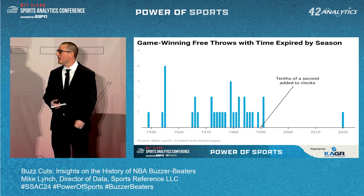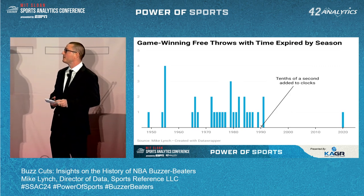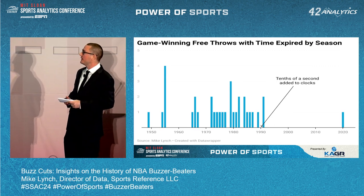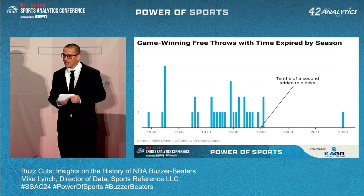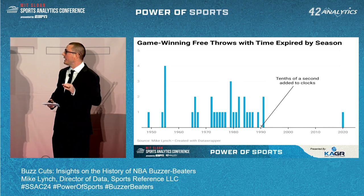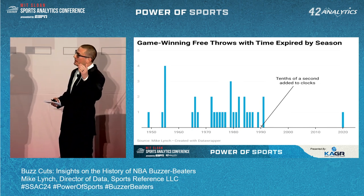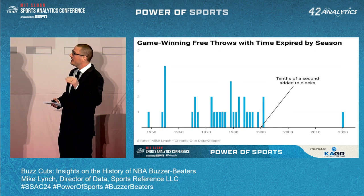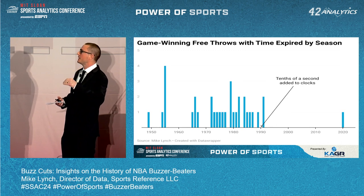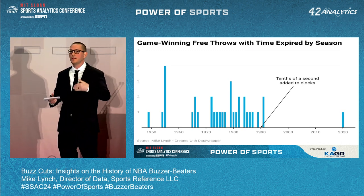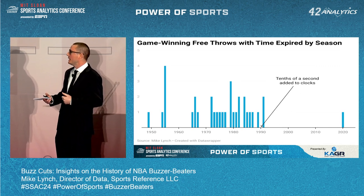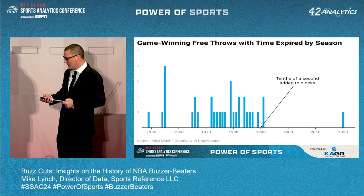There's one kind of buzzer beater where you can't possibly have an assist — game-winning free throws with no time left on the clock. As you can see, there's only been one of these in the last 30-plus years: Jimmy Butler in the bubble playoffs against the Hawks in 2020. My hunch is that they added the tenth-of-a-second to clocks in the last minute of the game in the 1989-90 season. The specificity of clocks now, combined with replay review, makes it almost impossible for that play to happen, which makes it crazy that it did happen in the 2020 bubble.